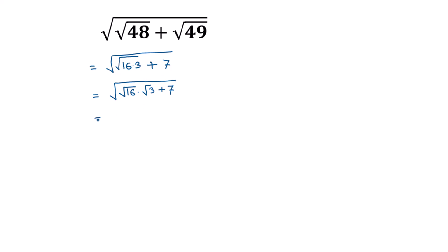Square root of 16 can be written as 4, so this becomes 4 times square root of 3 plus 7. That is 4 times square root of 3 plus 7.